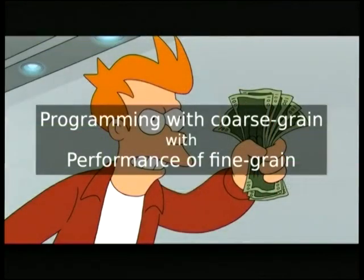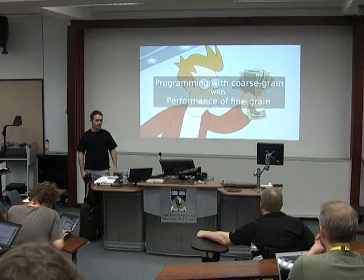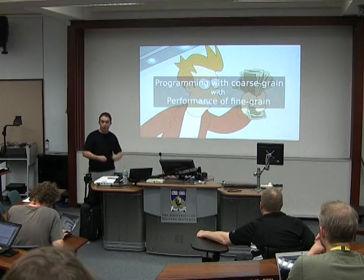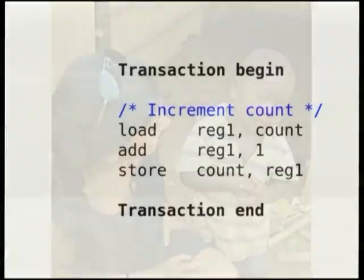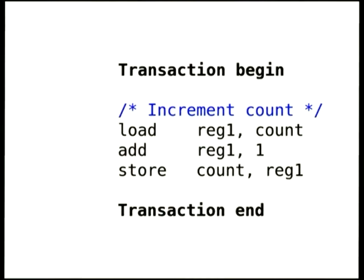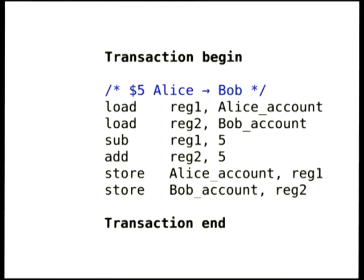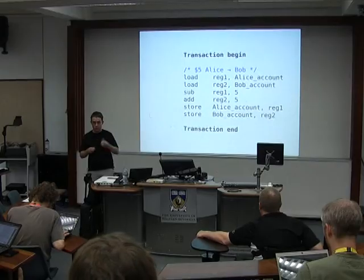Transactional memory is advertised as giving you the programming of coarse-grain but with the performance of fine-grain — you only have to start a transaction. In pseudo assembler it looks very similar to locking: begin a transaction, do your load-add-store, end the transaction, and anyone doing the same thing on a different CPU won't be able to race. With the Alice-to-Bob transfer example, you've got two loads at the top, load both accounts, add to one, subtract from the other, then store both — someone will only ever see both stores or neither.